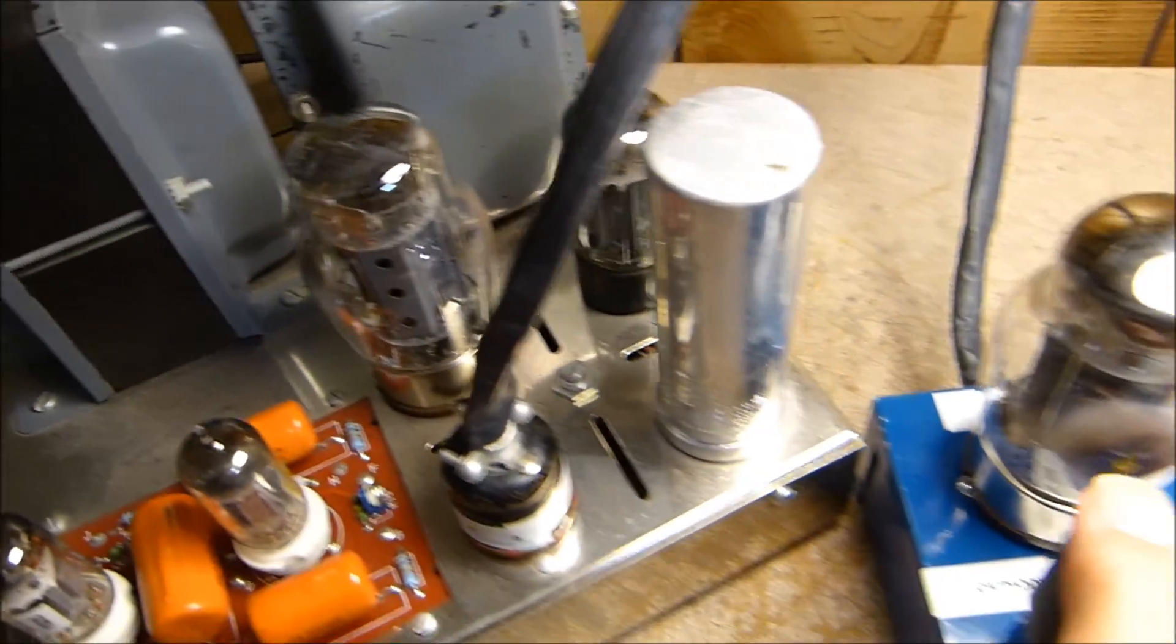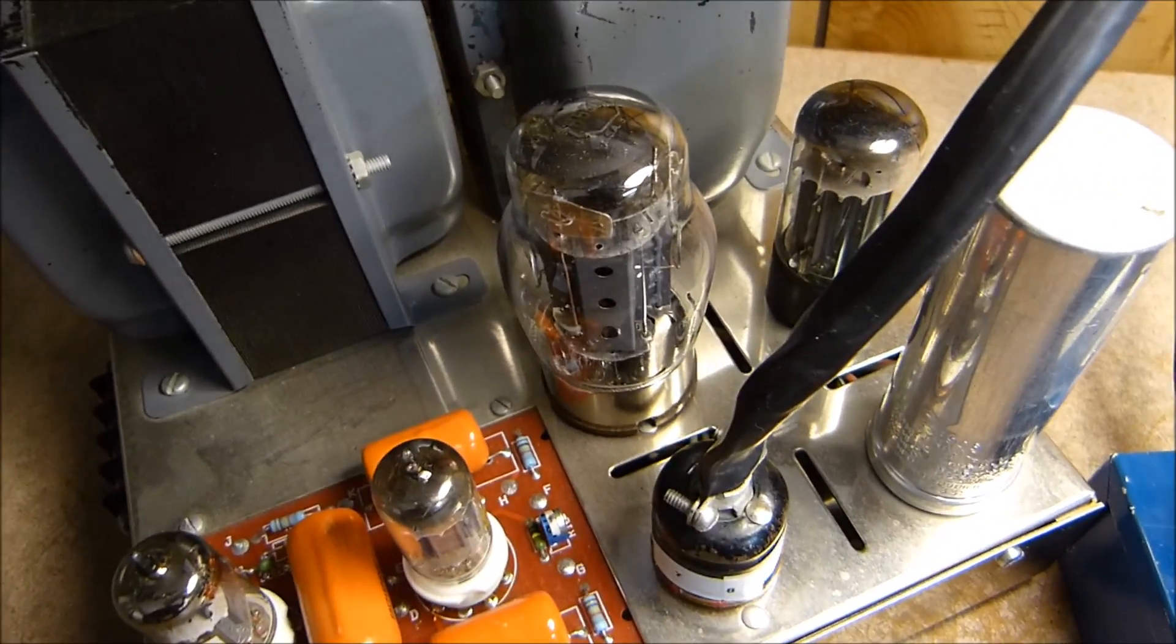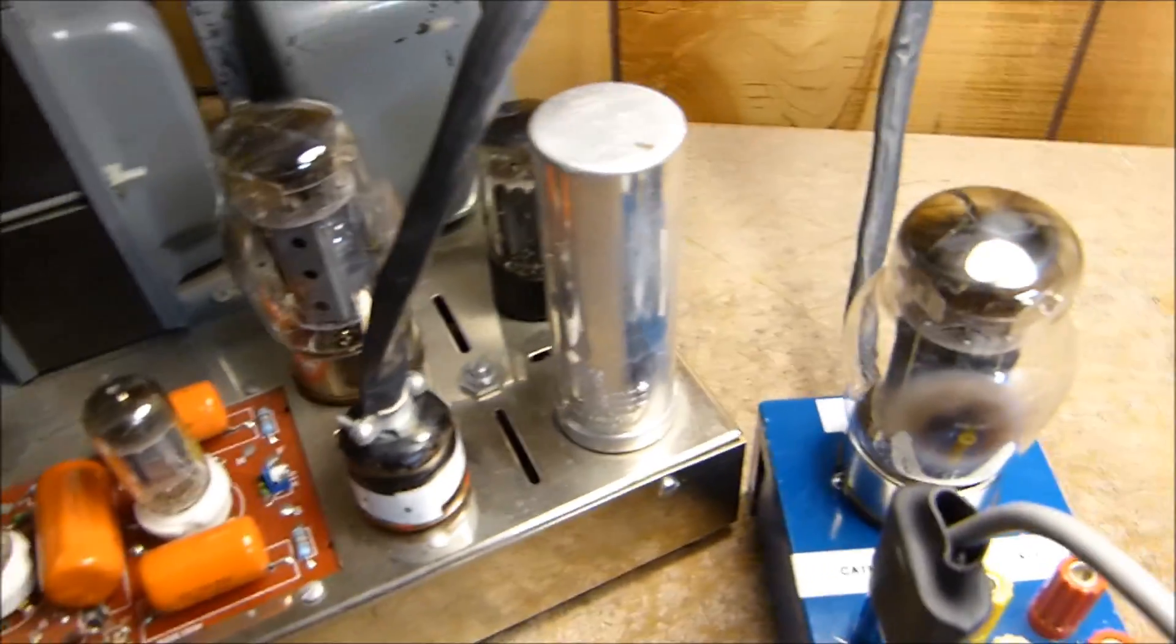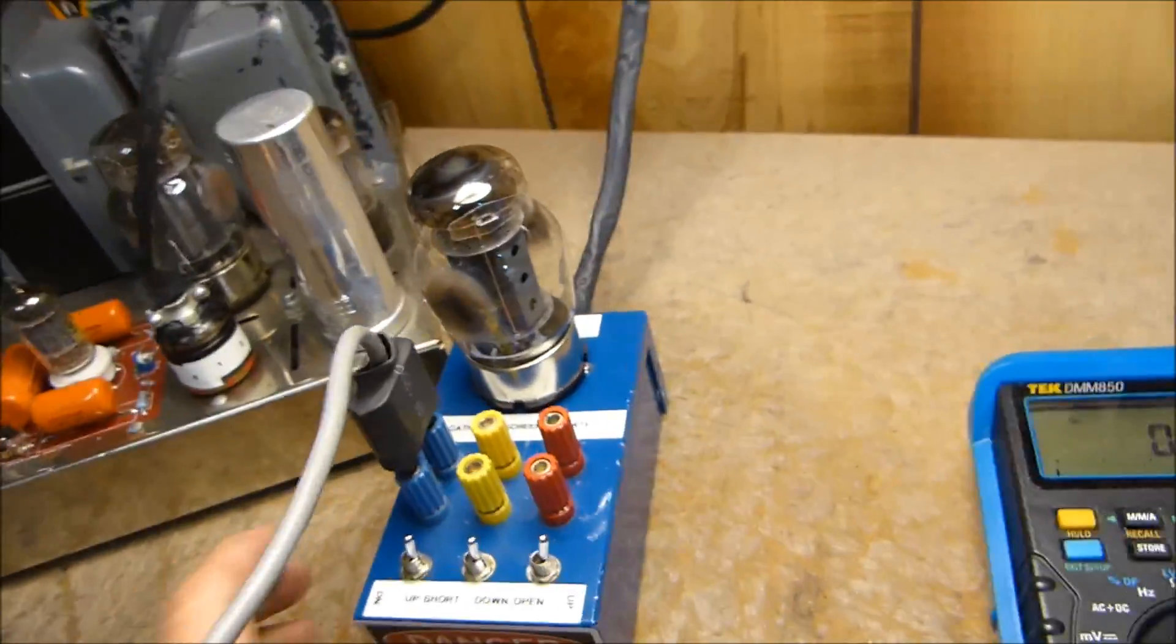Then you could measure both tubes one at a time in this socket, then you could actually move it to the other socket and measure it. It's going to tell you if your sockets are good. It's going to tell you just about all you can know about your tubes. I hope that helps.